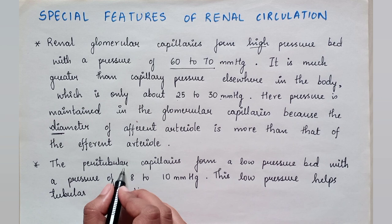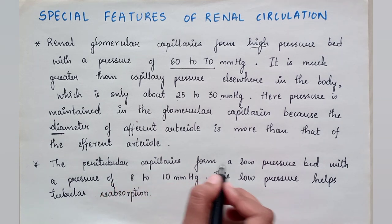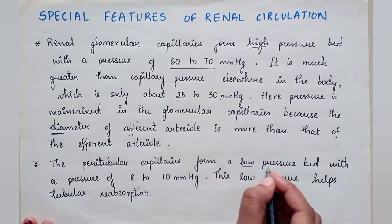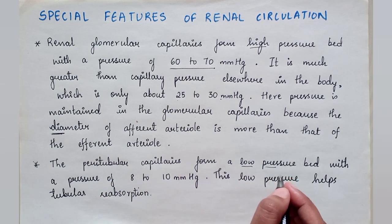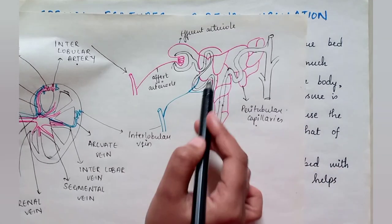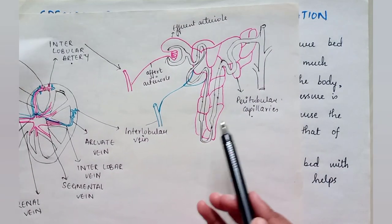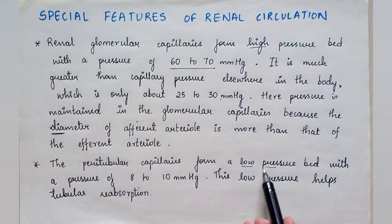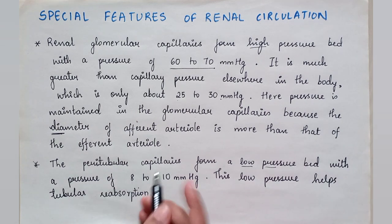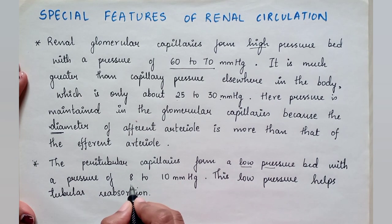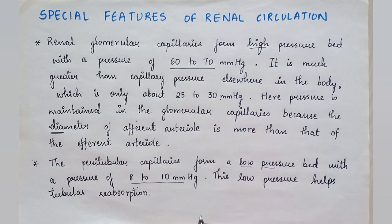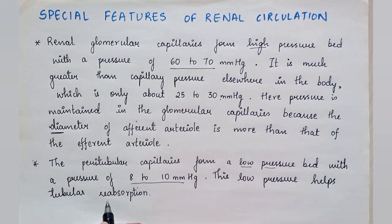The peritubular capillaries form a low pressure bed. These are the vessels around the nephron, and they form a low pressure bed with a pressure of 8 to 10 mmHg. This low pressure helps in tubular reabsorption.